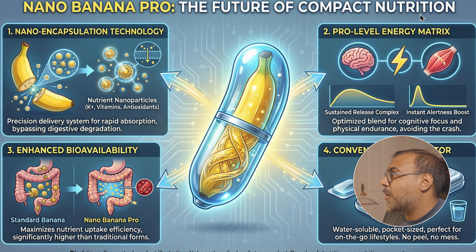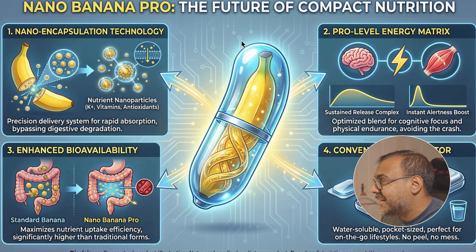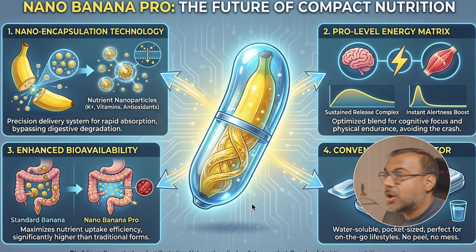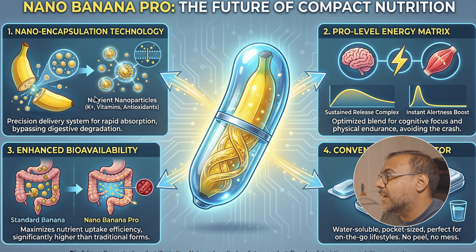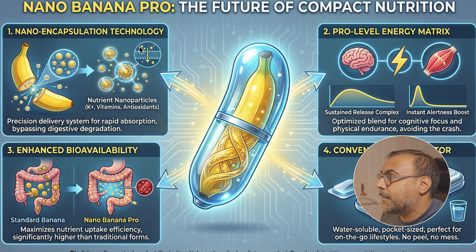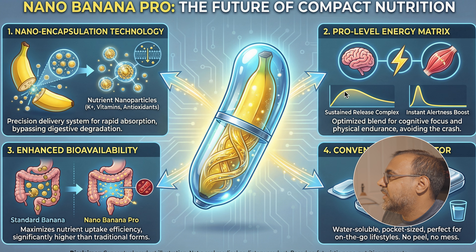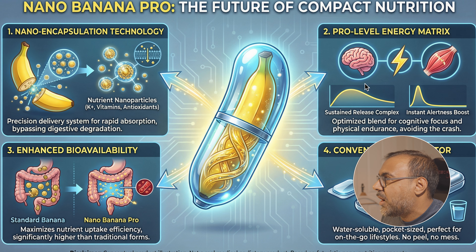We can see here: 'Nano Banana Pro, the future of compact nutrition.' Although it's a bunch of made-up stuff, it's cohesive and it makes sense. Nowhere can I see a single line of text that is gibberish, messed up, or nonsensical. Looking at this Nano Banana capsule context, it's created the idea of a capsule technology — we've got the banana with molecules, talking about a precision delivery system for rapid absorption, bypassing digestive degradation, and then it talks about nutrient nanoparticles.